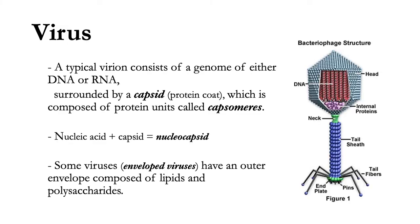A typical virion consists of a genome of either DNA or RNA, surrounded by a capsid (the protein coat), which is composed of many small protein units called capsomeres. Together, the nucleic acid and the capsid are referred to as the nucleocapsid. Some viruses, called envelope viruses, have an outer envelope composed of lipids and polysaccharides. Aside from protecting the DNA or RNA inside it, the envelope plays a role in viral infection, helping in entering cells and release of capsid contents into the host cell.